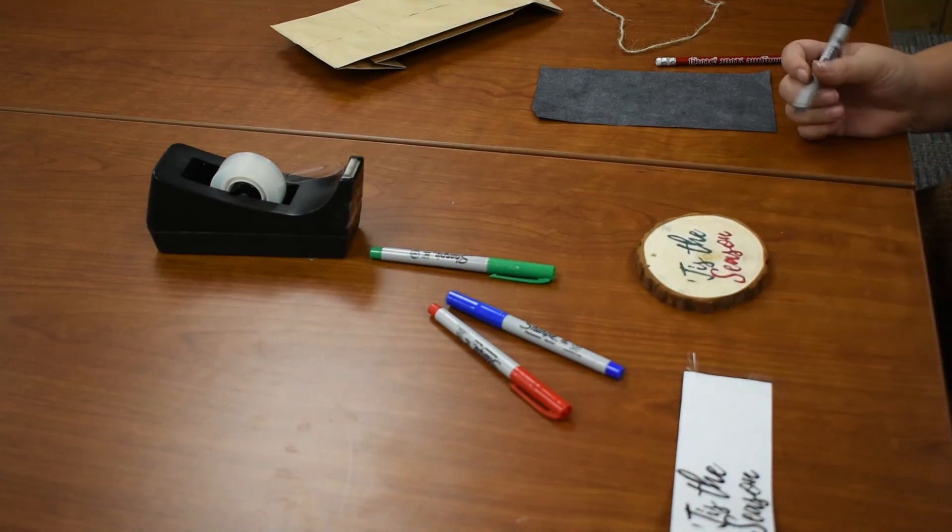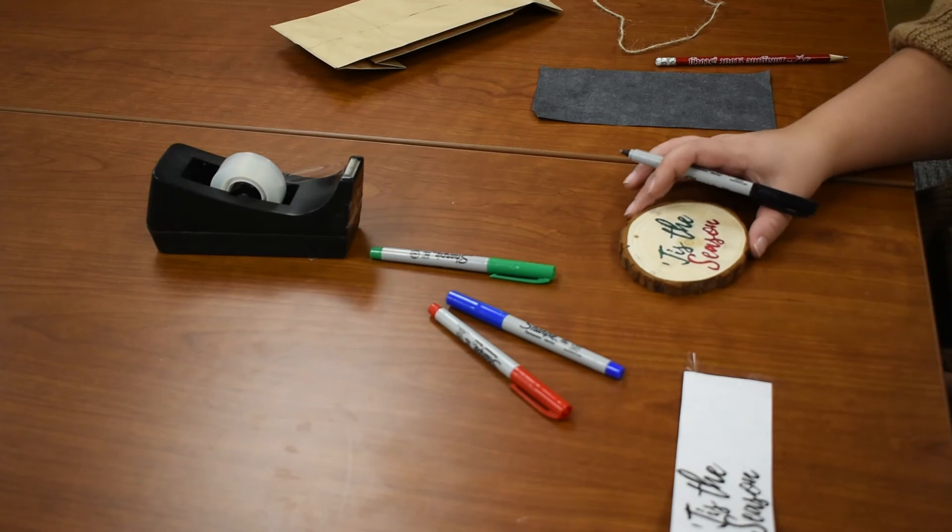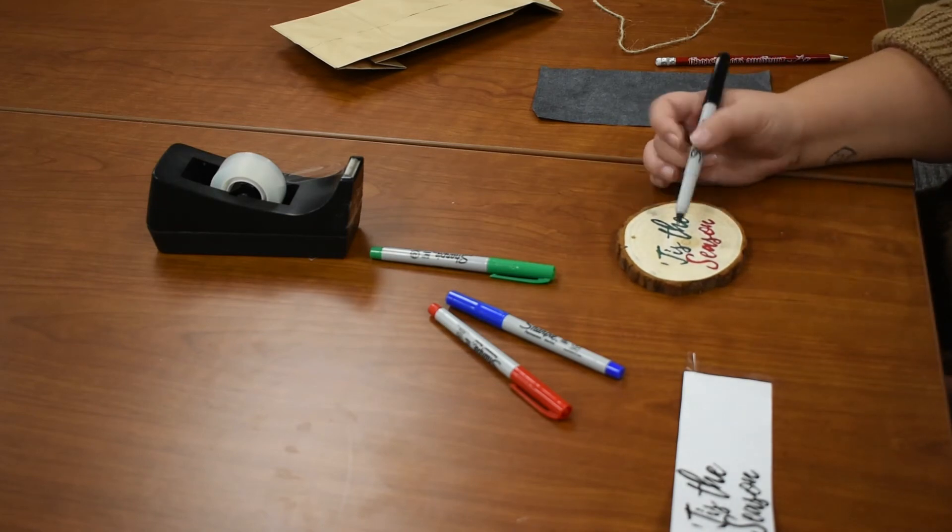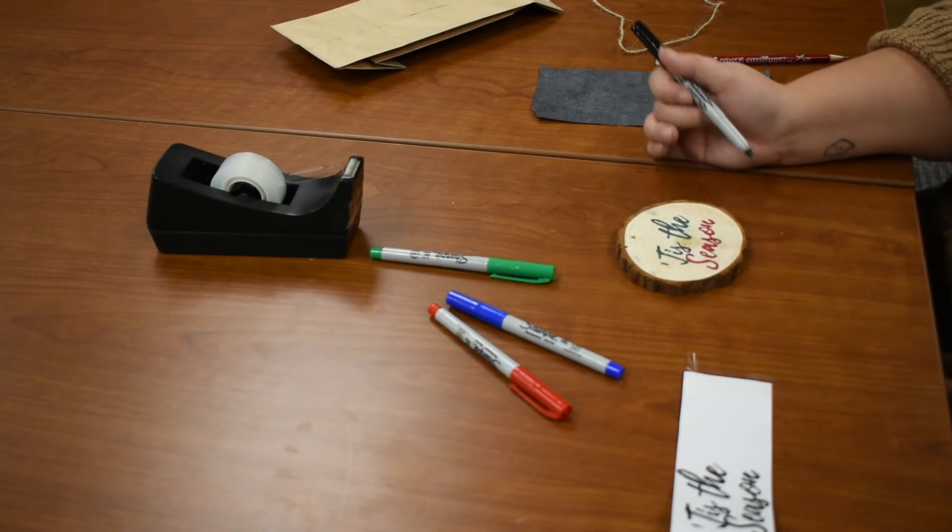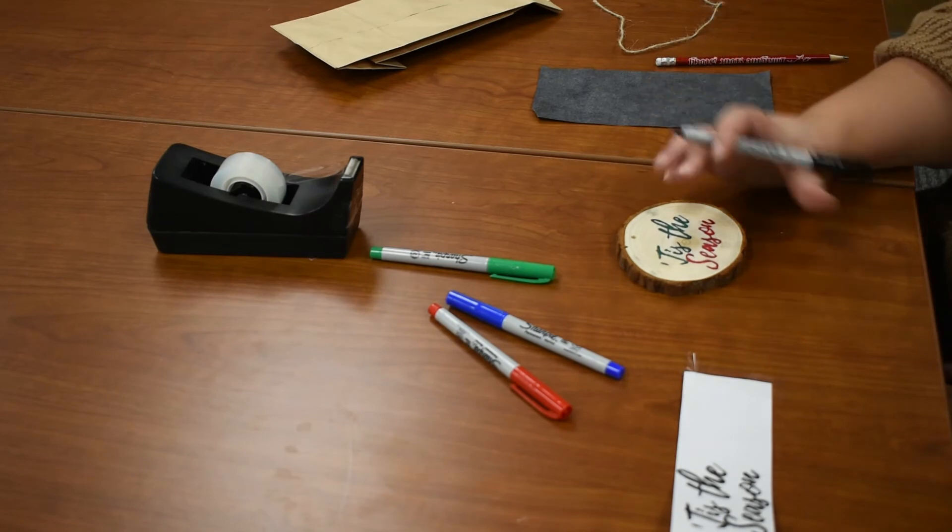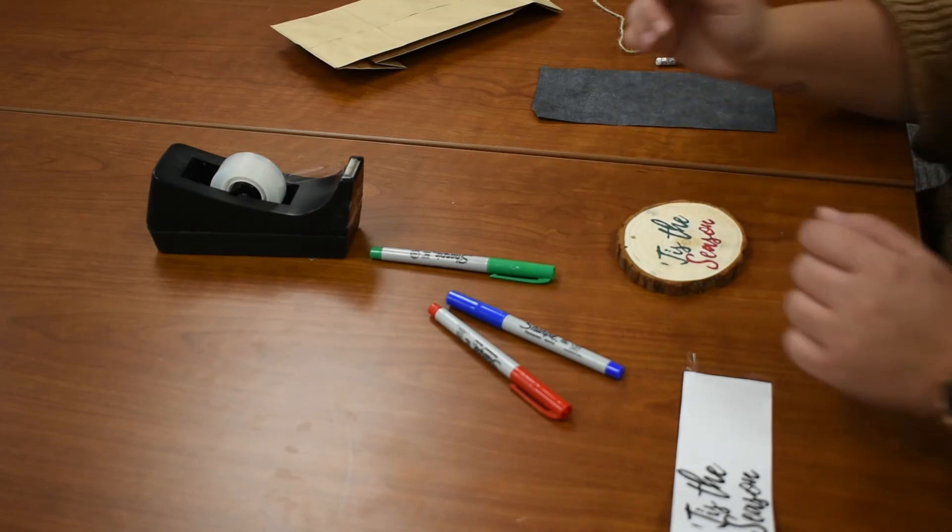Once you're done filling in the stencil that you've put on the wood piece, I will now outline it to give it a more seamless look, kind of stand out a bit more.